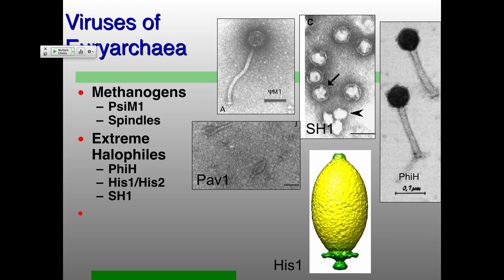After people studied the Crenarchaea viruses and noticed these very strange structures, they went back and looked at cultures of extreme halophiles. They found some particles that actually looked more like some of the Crenarchaea viruses. This is HIS-1, Haloarchaea hispanica virus-1 — a 3D reconstruction — and it probably looks a lot like SSV because it actually does have a very similar structure. The question immediately comes up: maybe the spindle shape is something specific to archaea, rather than just the high-temperature, low-pH environments.